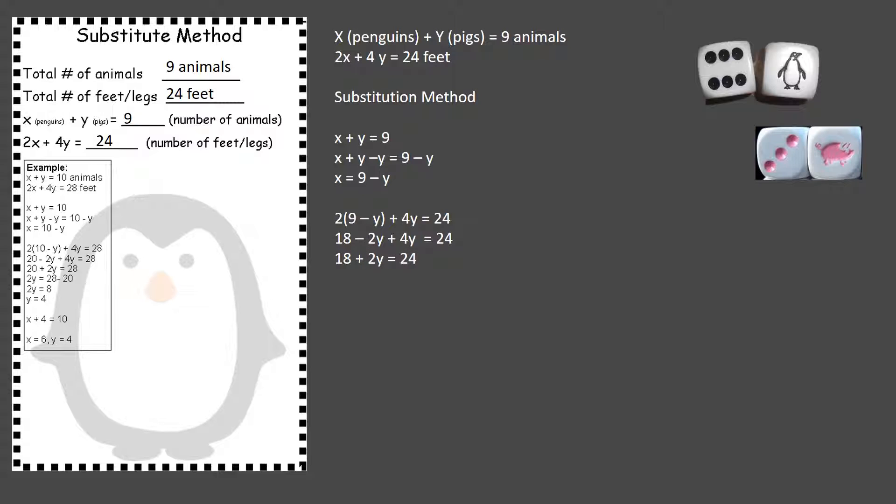So now we're going to subtract the 18 from both sides. And we're going to end up with 2Y equals six. Now we divide both sides by the two. And we now have Y equals three. So we've solved for Y.